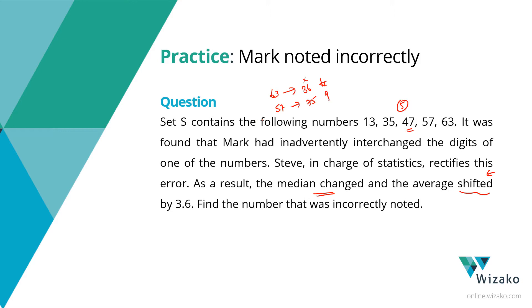Conversely, if the number that he noted down incorrectly had been 57, the incorrect version would have been 75, which means the value is going up, in which case the average would have gone up. So we do not know what is happening. I'm not saying these are the numbers he has noted down incorrectly. Two things happened. One, the median changed. Second, the average shifted by 3.6. So be open to the idea of the average increasing by 3.6, and also the possibility that for some other number, the average could go down by 3.6. What we need to find out is, what is the number that is noted incorrectly?